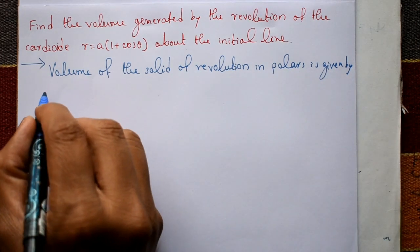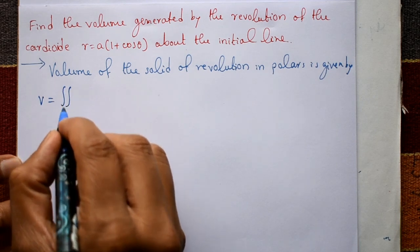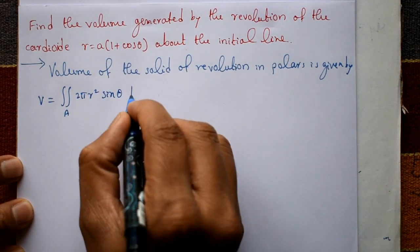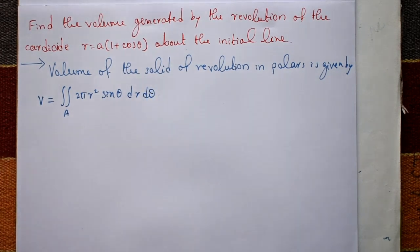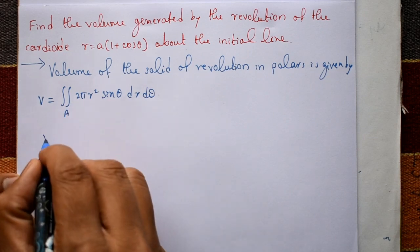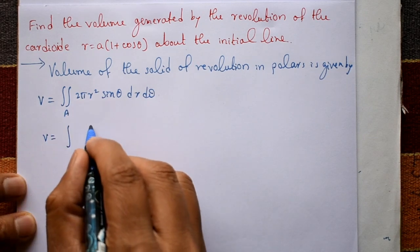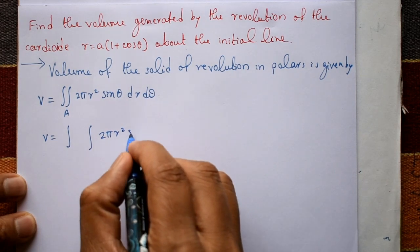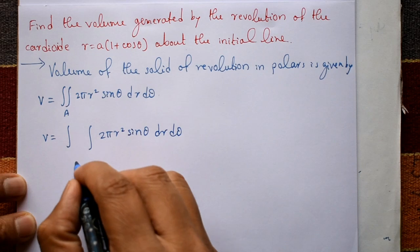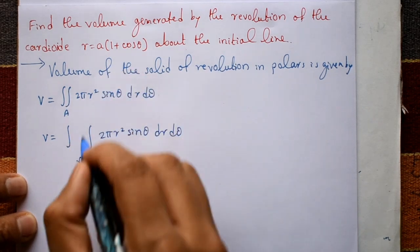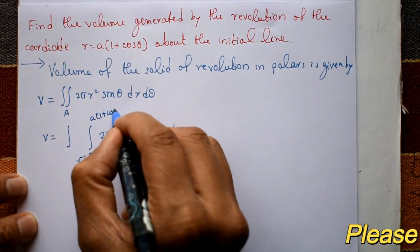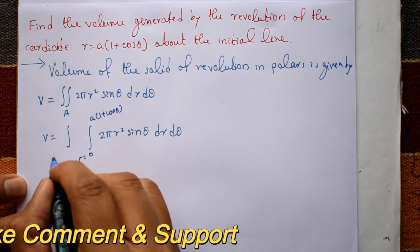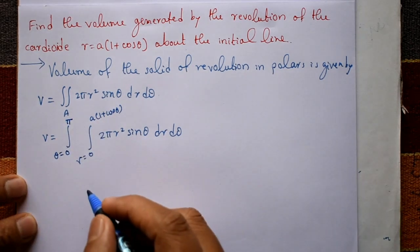The volume of the solid of revolution in polar form is given by V = ∬ 2π r² sinθ dr dθ over region A. We need the limits: with respect to r, it goes from 0 to a(1 + cosθ). About the initial line means the angle θ goes from 0 to 180 degrees, that is 0 to π.